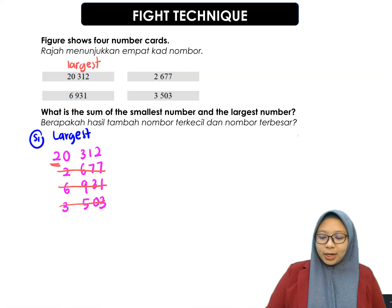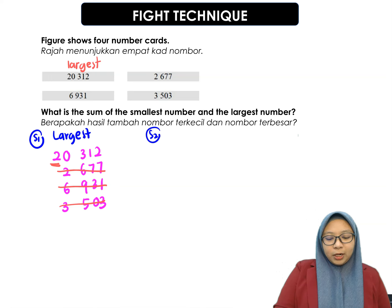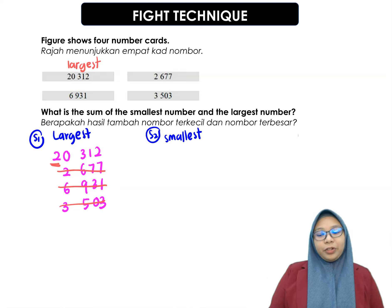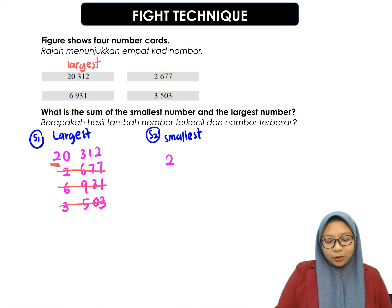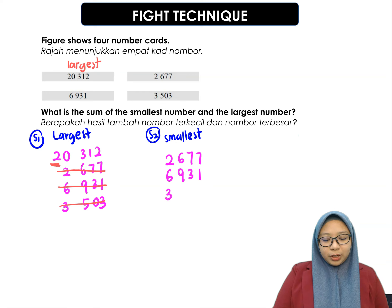And then, second step, we have to find the smallest number. So, list down all three numbers that we haven't used, which is 2,677, 6,931, and then the last one will be 3,503.